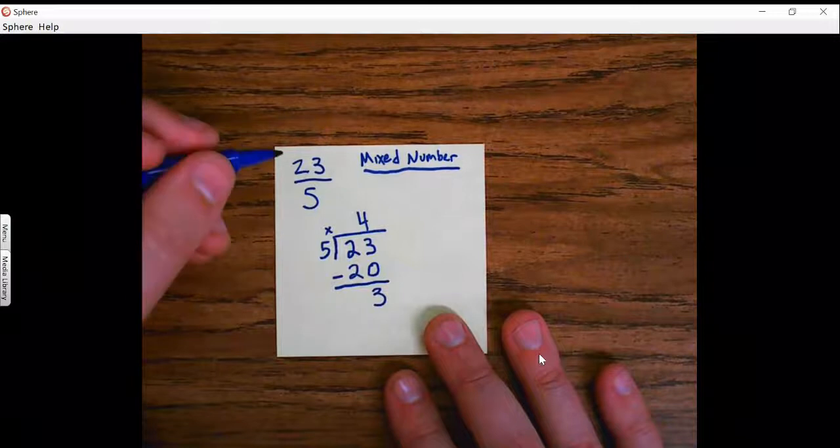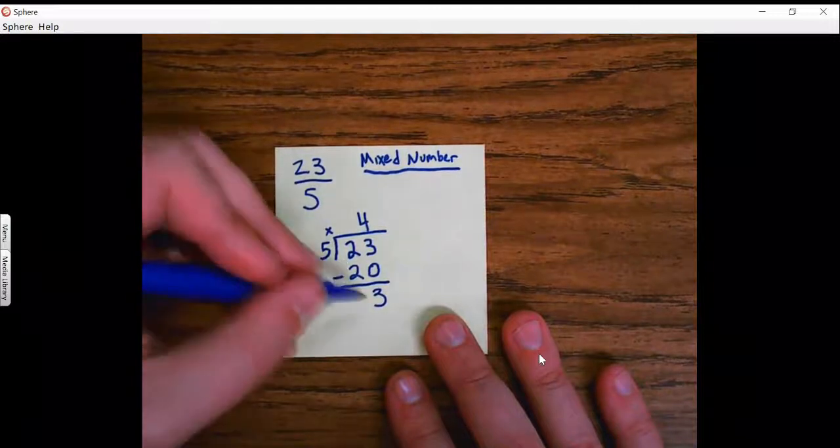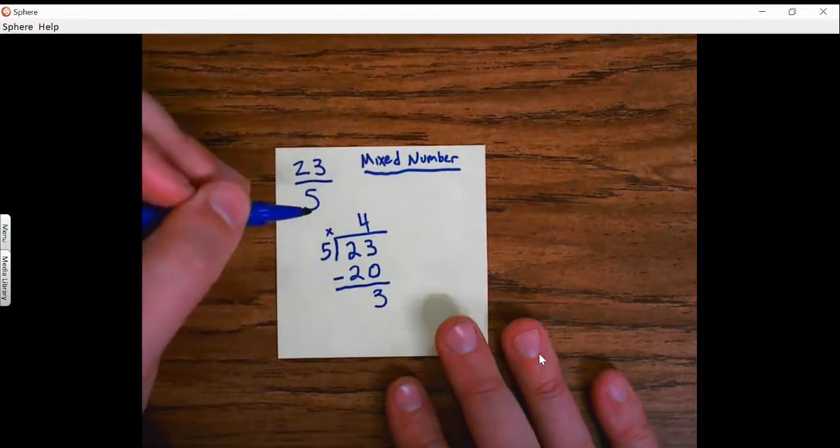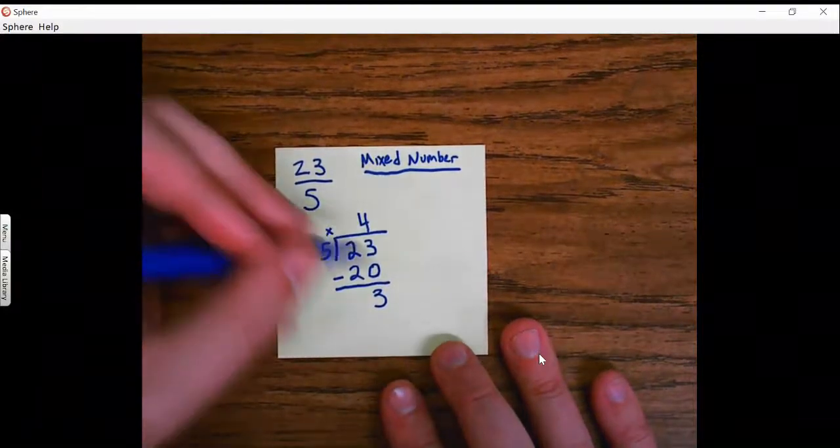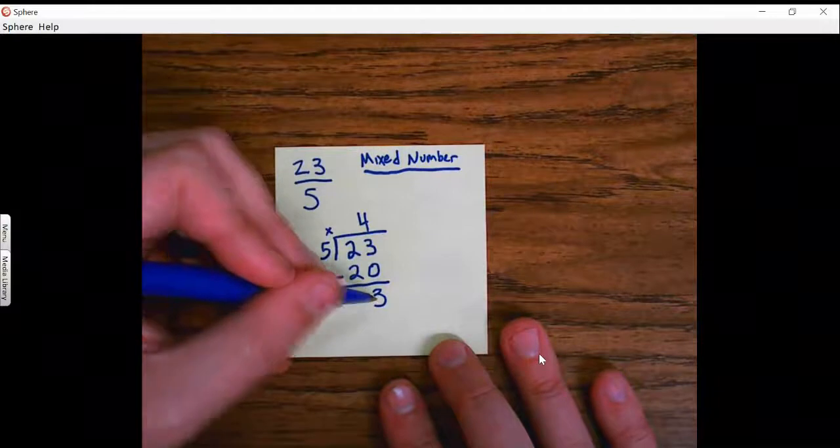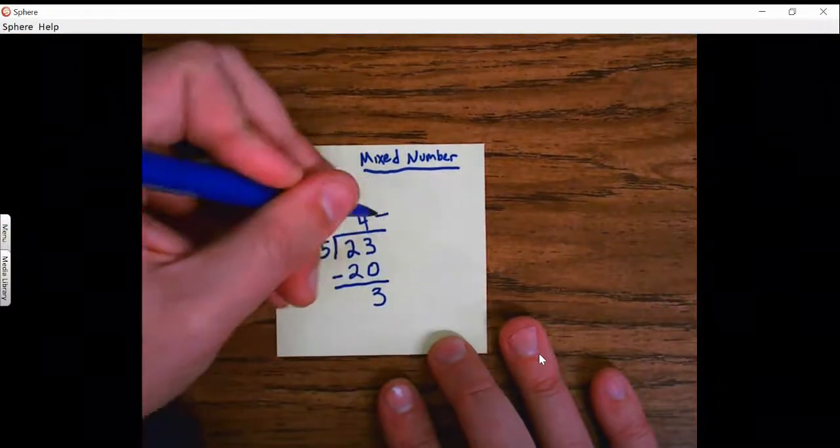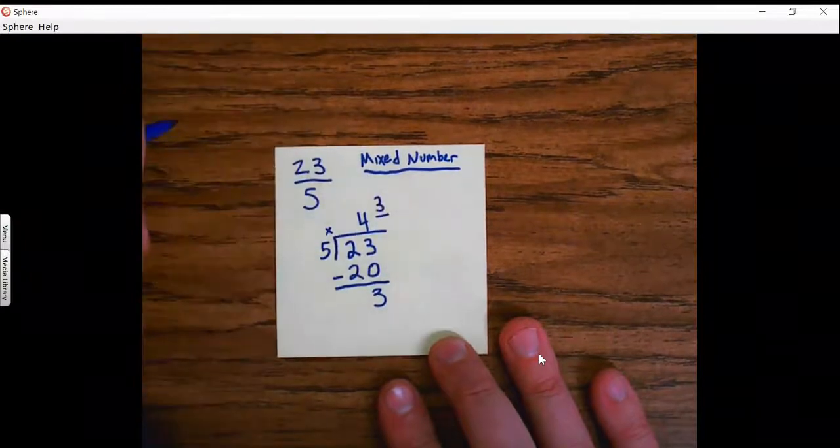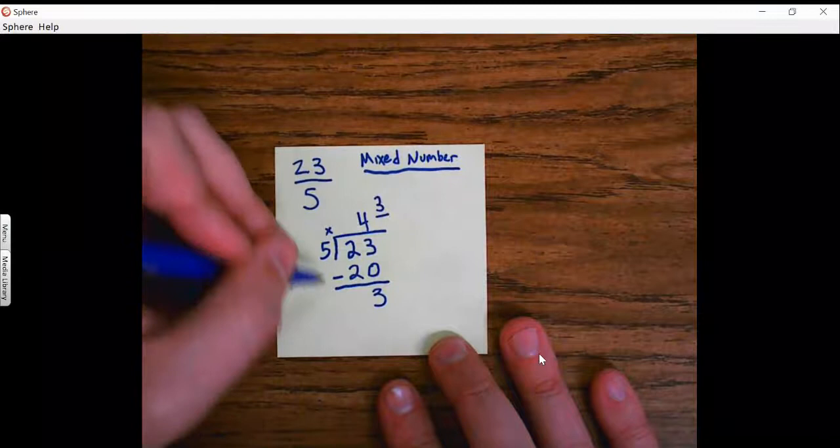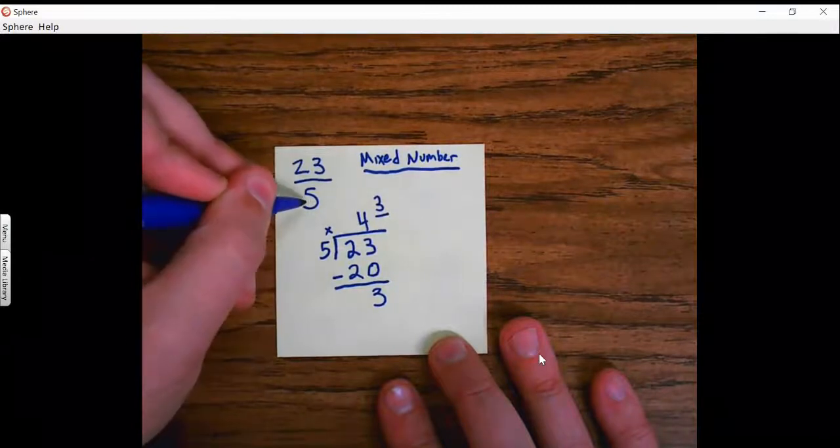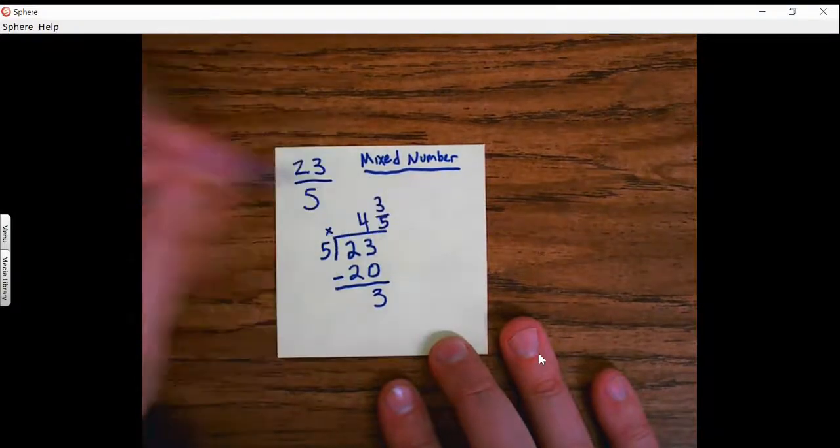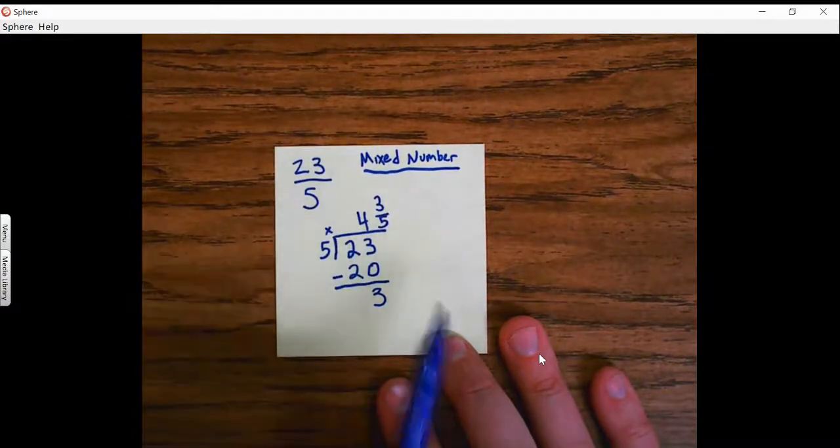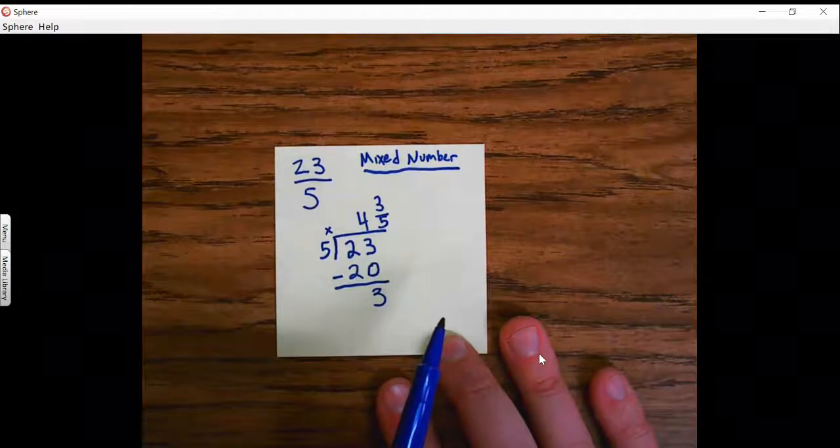Now in the past when we've stopped there, we've written this as a 4R3. Writing it as a fraction is really similar. All that I do is I'm going to take this 3 and I'm going to make it the numerator, so the top part of my fraction, a 3 right there. And then my denominator stays the same as it was, a 5. So 4 and 3 fifths would be equal to my 23 fifths.